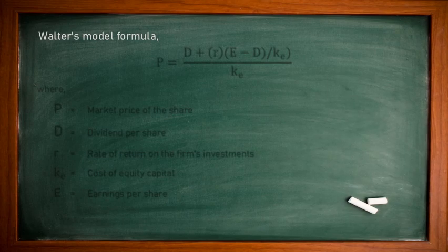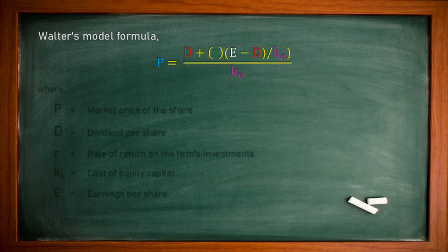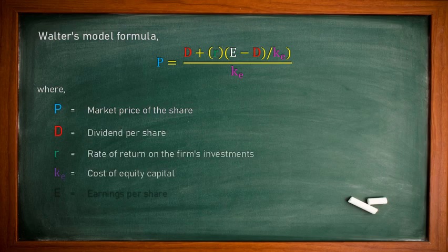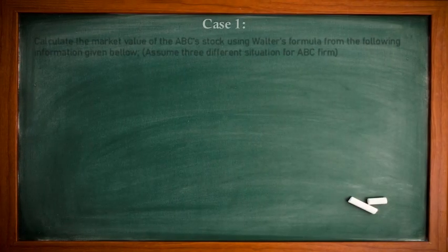Walter provides one formula. We can drive that formula and verify whether his assumptions hold true. His formula is: P = [D + R(E − D) / KE] / KE. Where P is the market price of share, D is dividend per share, R is rate of return on investment, K is cost of equity capital, and E is earnings per share. We will now go through cases to apply the formula and check the results.